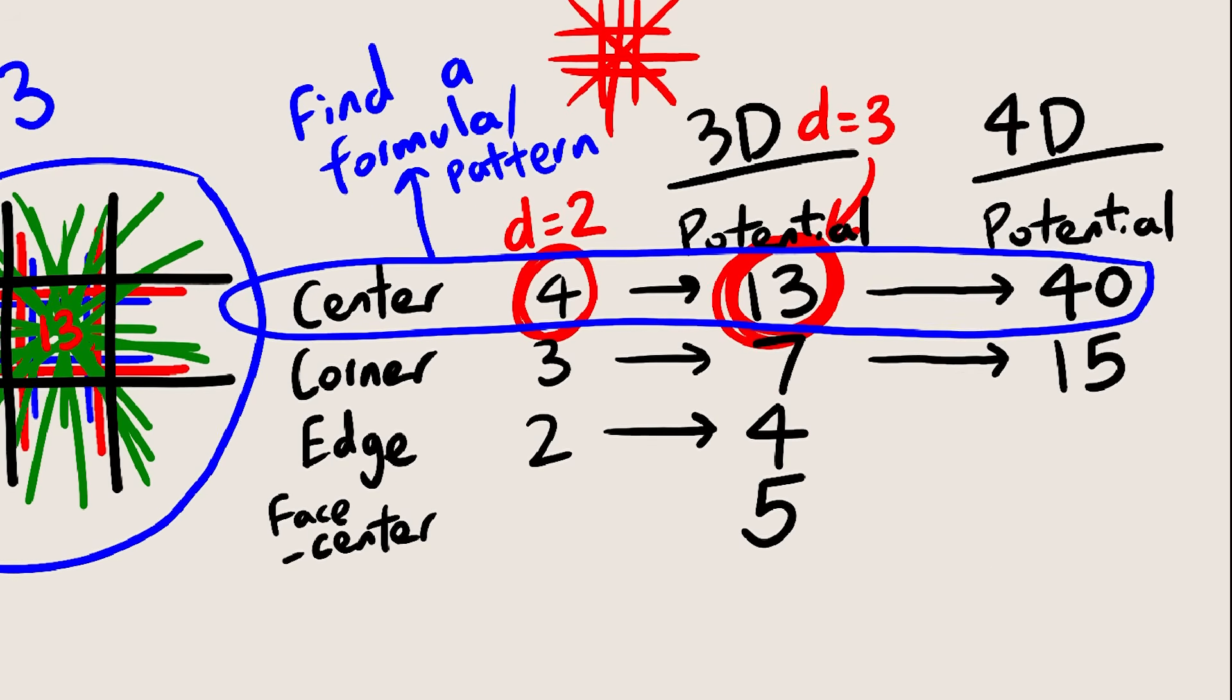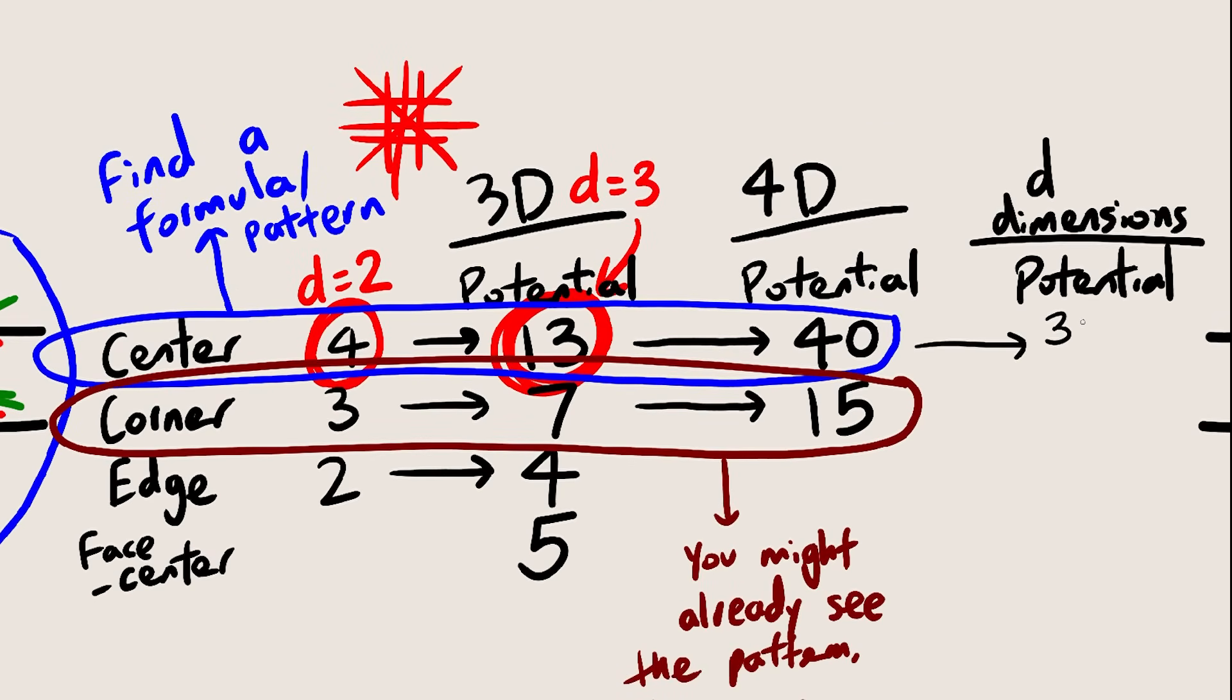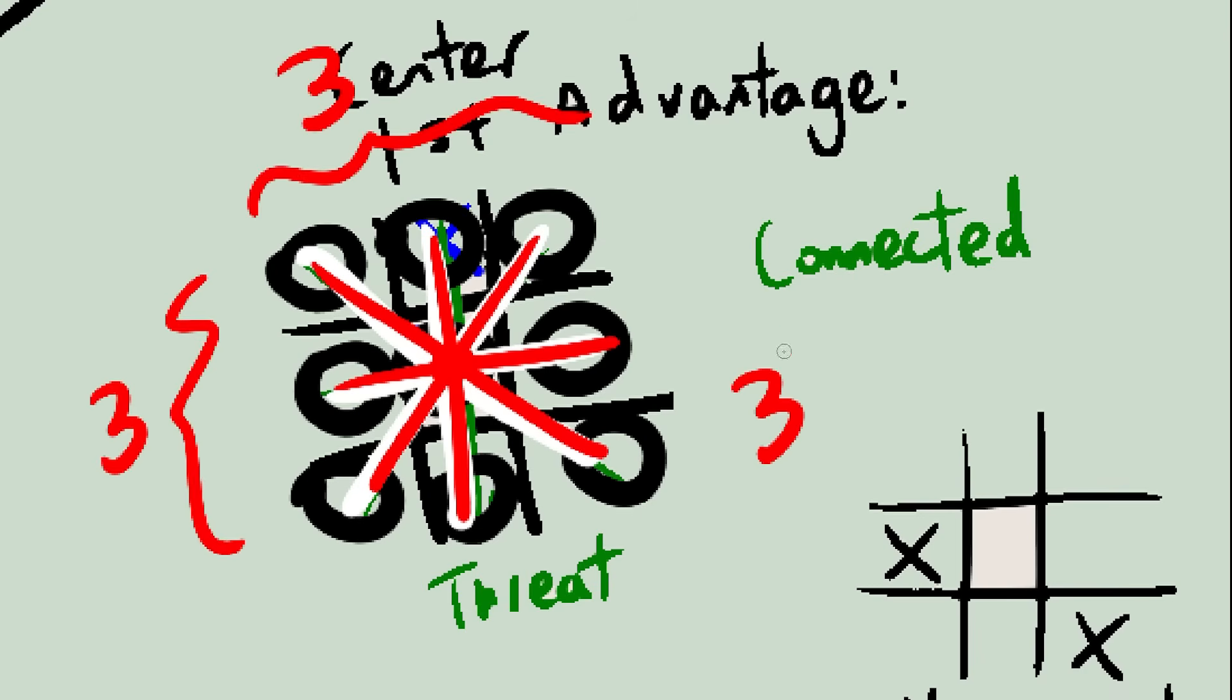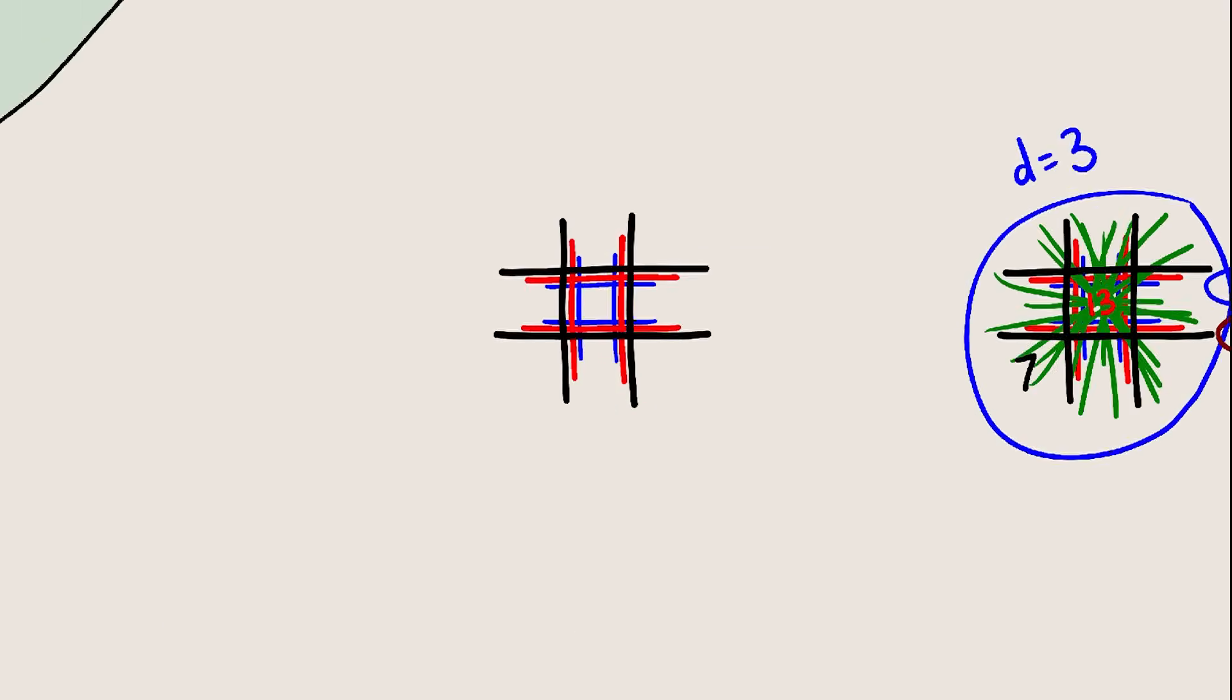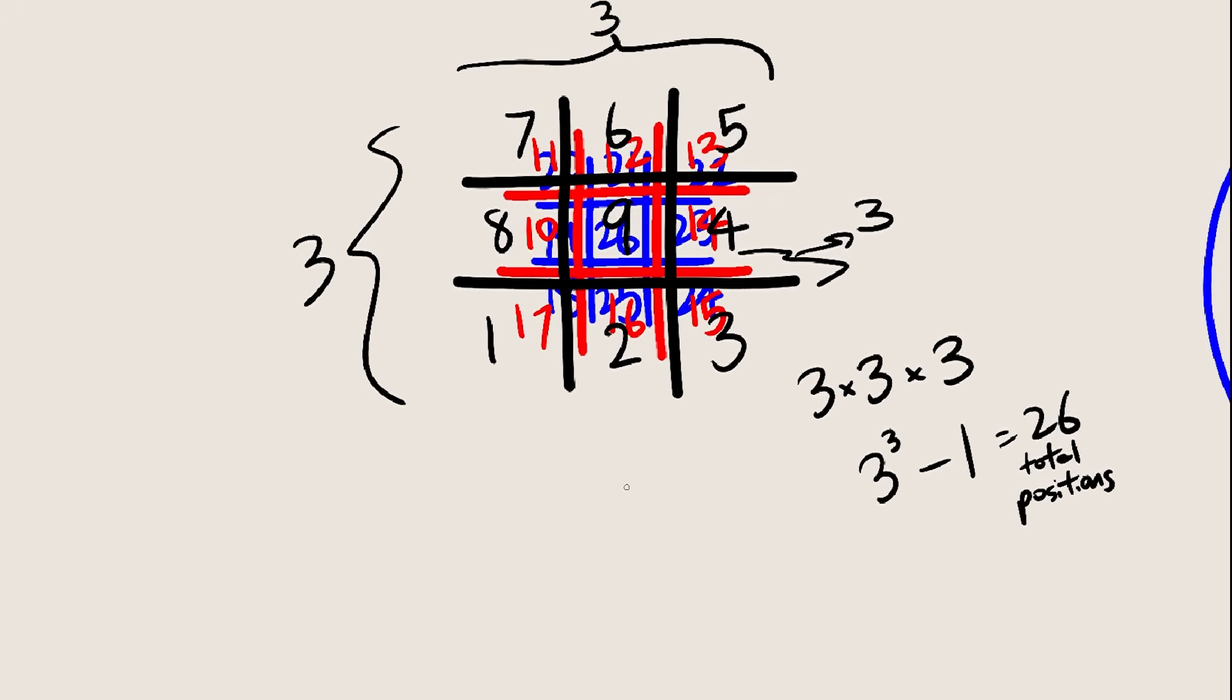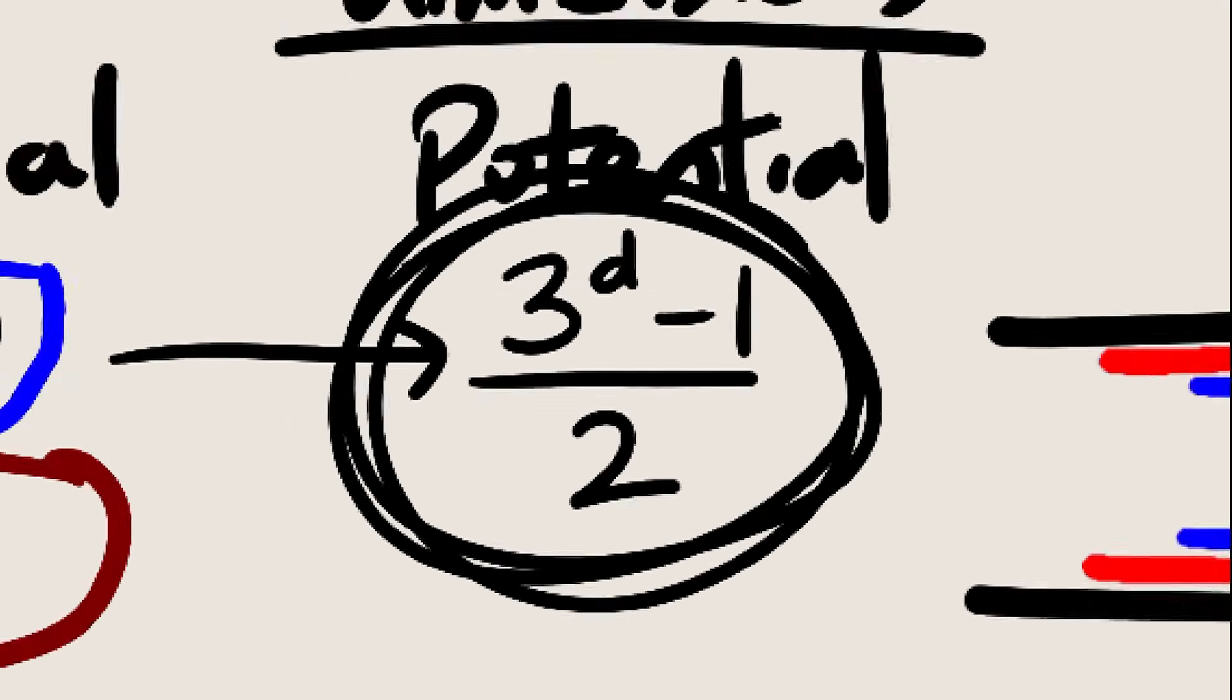Okay, the potential of the center spot is 3 to the power of D minus 1, all over 2. This is because the center is connected to every single position, as we saw before. There are 3 to the power of D total positions, minus the center, so minus 1. And there are half as many 3 in a rows, because each position is paired up with another position to form the 3 in a row. So for each two positions, there is one 3 in a row. And here's the same thing, but in 3D. So this is our general formula, the number of positions divided by 2.